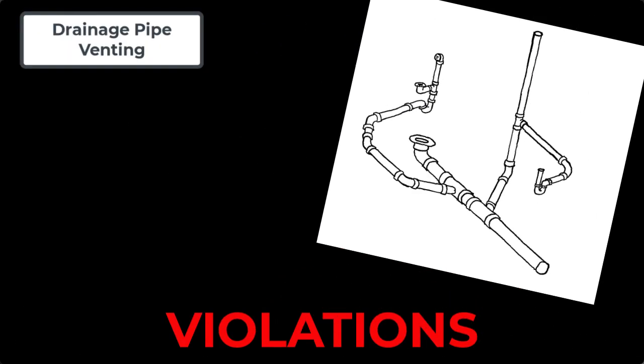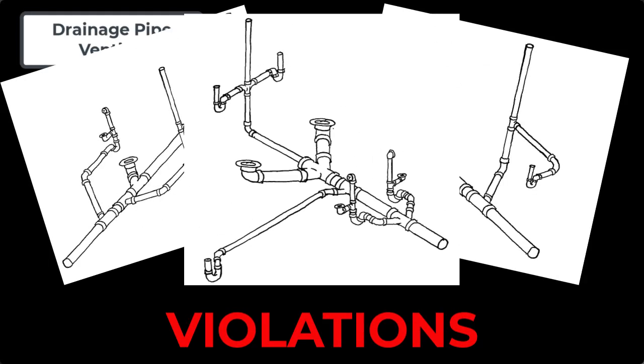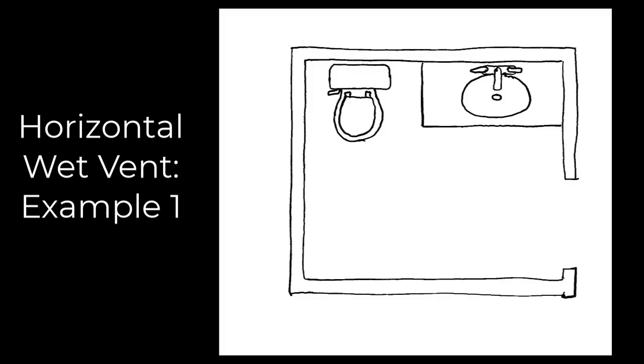Once we've had a look at some good examples, we will also look at some violations. Pay close attention to those — these are common mistakes that plumbers make because they don't know how to use horizontal wet venting properly. You can avoid making these mistakes. Let's get into some examples.